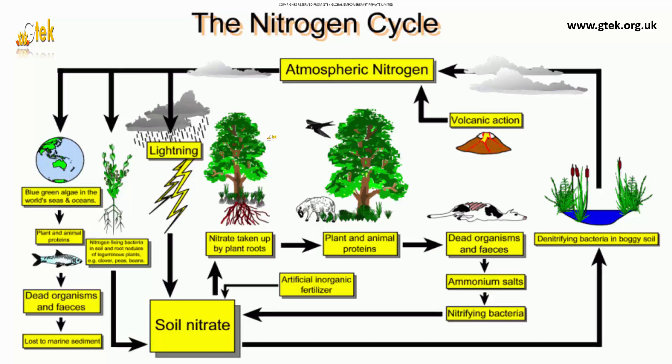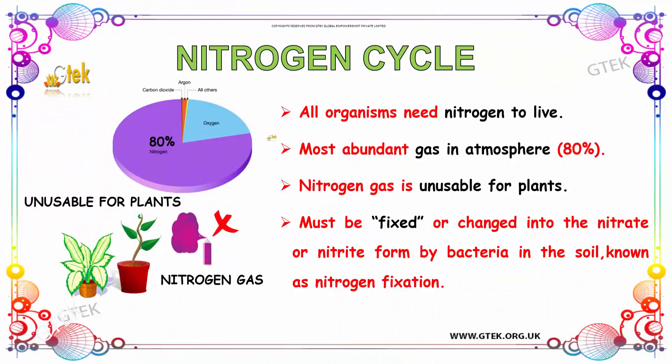All organisms need nitrogen to live. It is the most abundant gas in the atmosphere — about eighty percent — but nitrogen gas is unusable for plants. It must be fixed or changed into nitrate or nitrite, formed by bacteria in the soil. This process is known as nitrogen fixation.